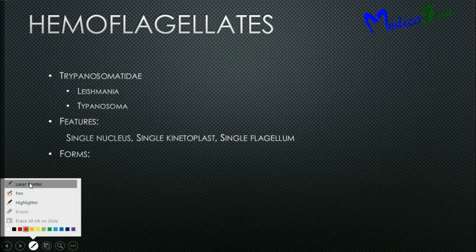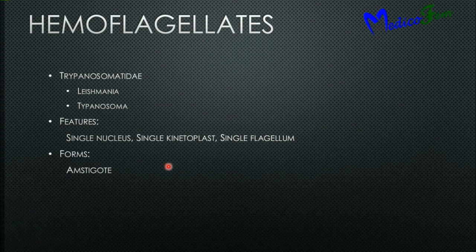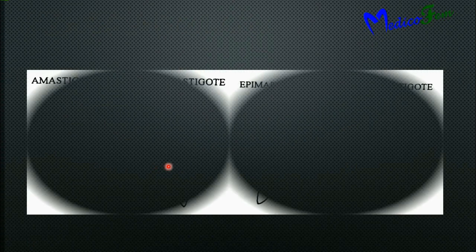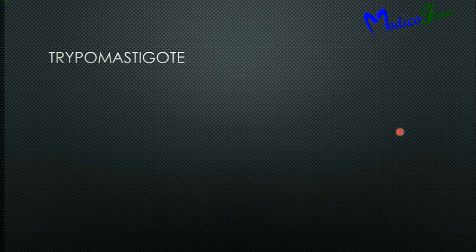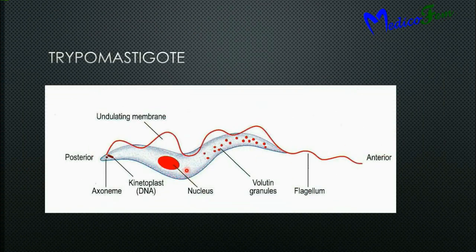They exist in four different forms: amastigoid, promastigoid, epimastigoid, and tripomastigoid. Amastigoid doesn't have flagella. Tripomastigoid is an elongated spiral structure having one flagellum arising from the posterior end, having volutine granules, a nucleus, and a kinetoplast containing genetic material.